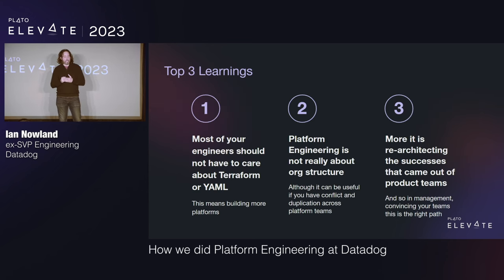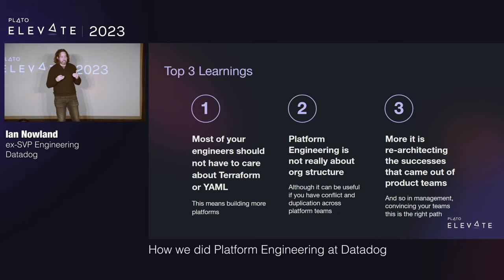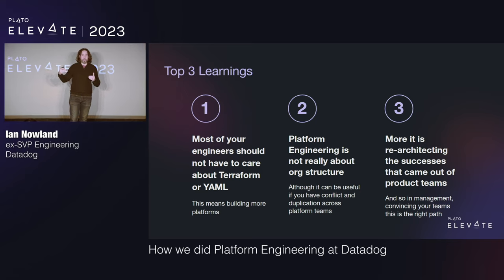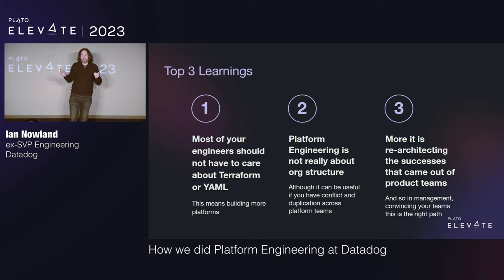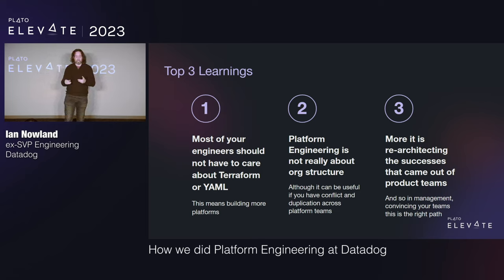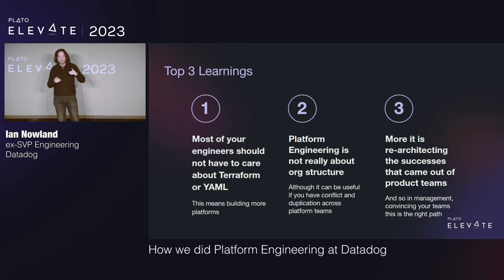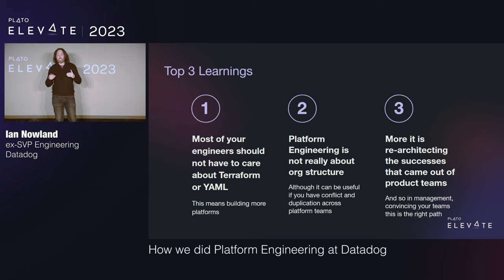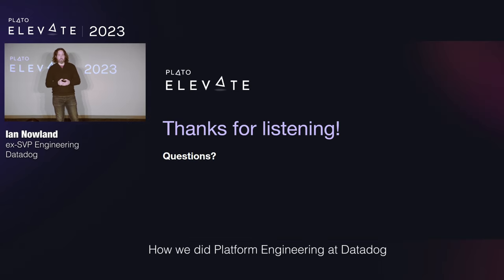My top three learnings: most application engineers at most companies — I know it sounds weird saying this in 2023 — should not be doing Terraform and YAML. This is not leverage to a business; it's an artifact of where we are as an industry migrating to the cloud. Second, platform engineering is not really about org structure. Org structure can solve some problems and creates others — I definitely wouldn't want people to think it's the band-aid. The big thing is management, no matter what your org structure is, being able to convince the types of engineers who want to take on scrappy work and do the re-architecture — that's what ends up building good platforms over time.